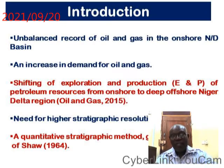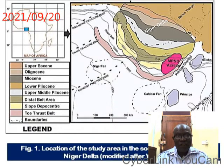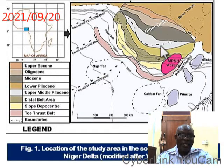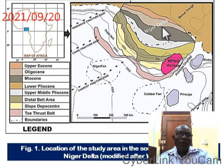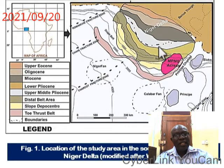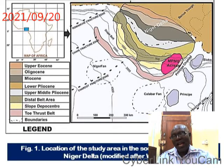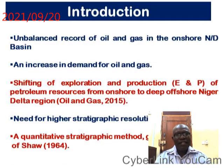Shown below is the map of the location of the study area, that is the Niger Delta. Up here is the onshore Niger Delta, and down is the offshore Niger Delta. Because of the problems encountered in the onshore Niger Delta, exploration and production of oil and gas moved to the offshore Niger Delta, and the deep offshore Niger Delta required higher stratigraphic resolution.